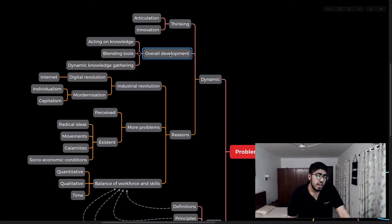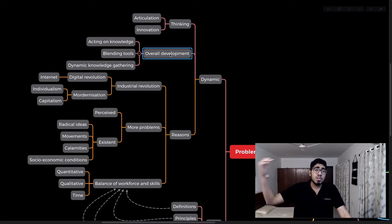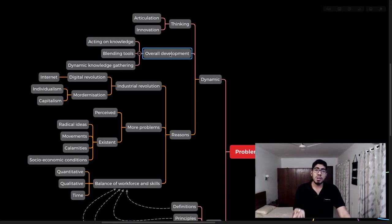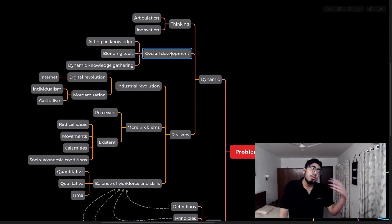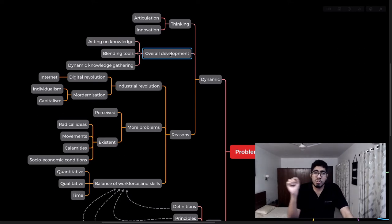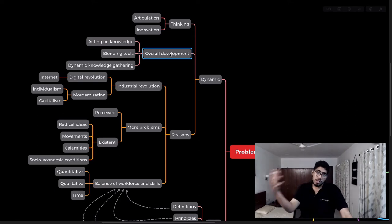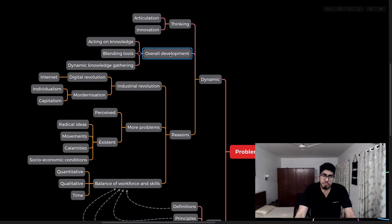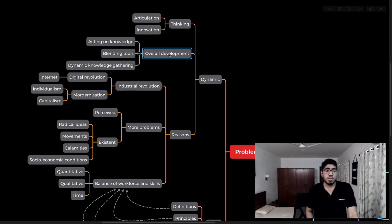A lot of people criticize schools for not producing enough specialized people — yes and no. If you are an athlete and you want to grow into something else, and you don't have enough skills at your disposal, your growth becomes static. Being an entrepreneur requires being a jack of all trades — you need to understand different things, speak different languages, and facilitate and delegate tasks to people.